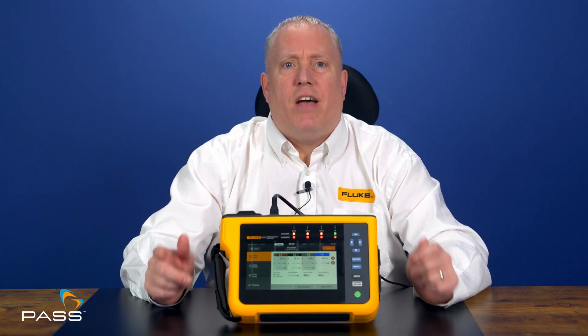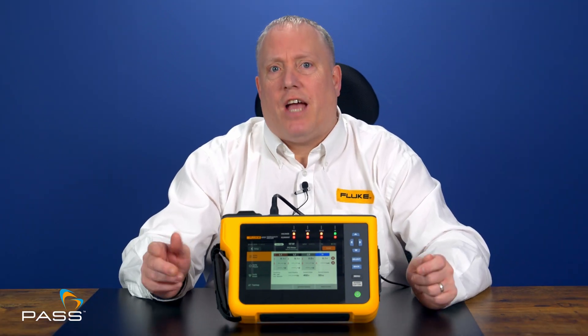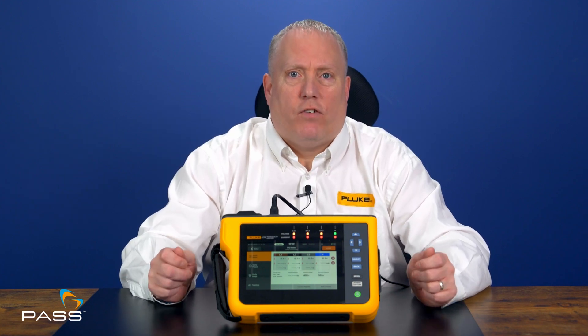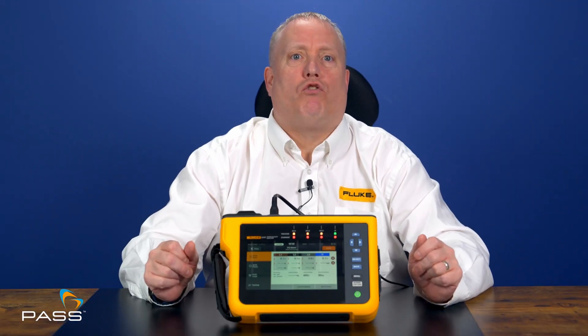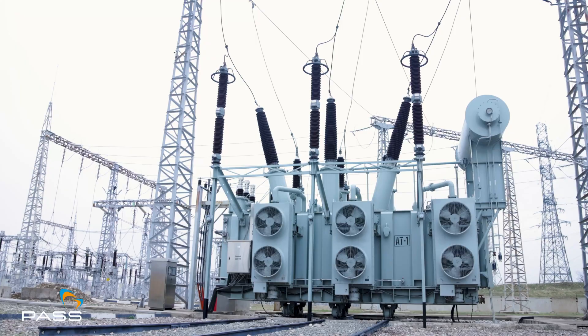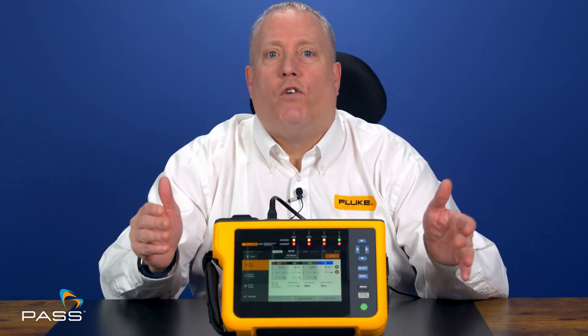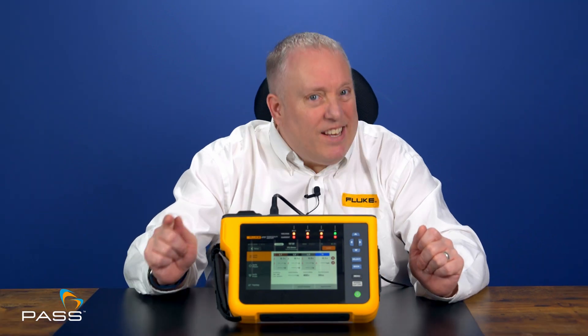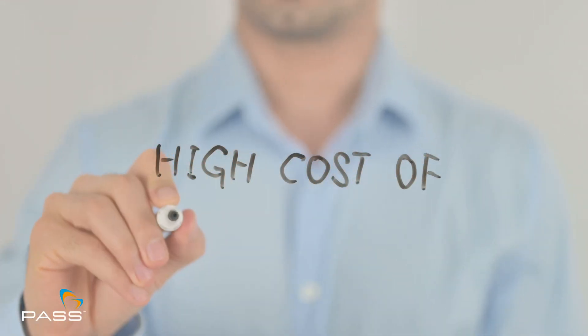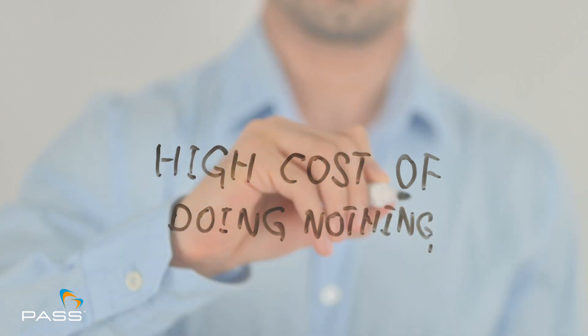Reactive power, measured in kilovolt amperes reactive or KVAR, doesn't do any useful work itself, but it's crucial for keeping your system running. Reactive power is what drives the magnetic fields in motors and transformers. Think of it as the assistant that sets the stage for real work to happen. But here's the catch: too much reactive power can lead to inefficiencies and higher costs.